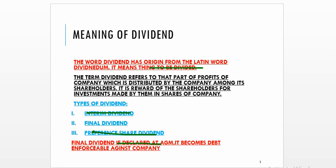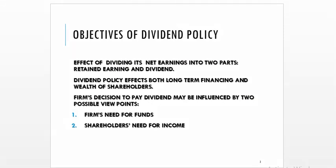If the board of directors recommends, then it will be declared at the Annual General Meeting. The company's net earning is divided into two parts: retained earnings and dividend. Because the company is an artificial person, the company's owners are the shareholders — they are the real owners — but there is a separation between ownership and management because the company is managed by the board of directors. So dividend policy affects both long-term financing and the wealth of the shareholder.